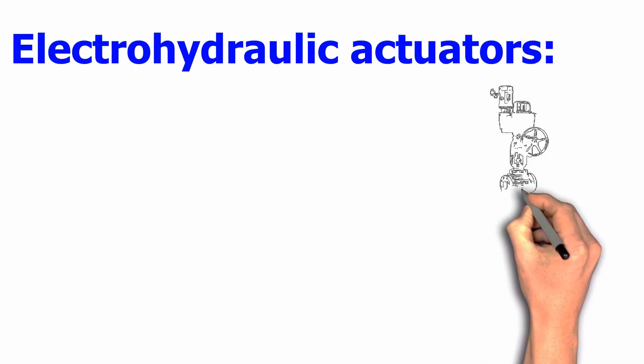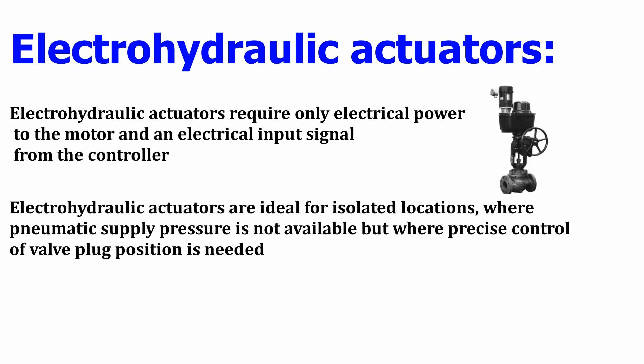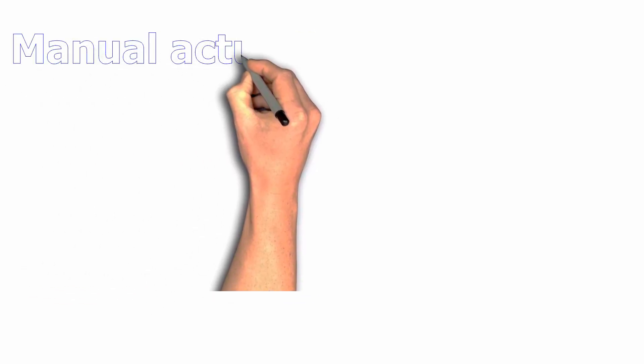Next, we look at electro-hydraulic actuators. These require only electrical power to the motor and do not use any pneumatic actuation system. The motor provides thrust to the actuator stem to open, close, or throttle the valve. Electro-hydraulic actuators are ideal for isolated locations where pneumatic supply pressure is not available — such as areas in a plant where adding an instrument air compressor is not feasible. An important unique factor is that precise control of the valve plug position is guaranteed.